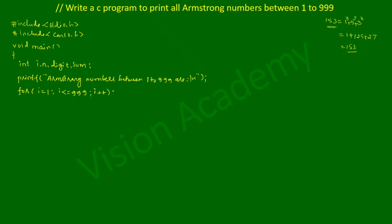Inside the for loop body, we write i++ and open a curly brace. We equate the value of i to the variable n: n = i. Then we initialize sum to zero: sum = 0.